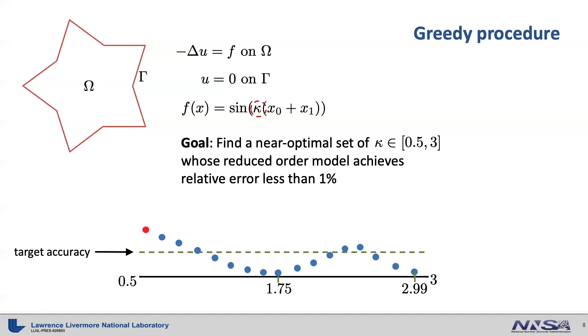Then the greedy algorithm repeats the process by finding the next maximum relative error point, which is depicted again by the red point here. Then add the simulation data at that point and update the reduced order model and relative error distribution until all the relative errors become less than 1%. The greedy algorithm will not give the optimal set of sampling points, but it would give near optimal one.